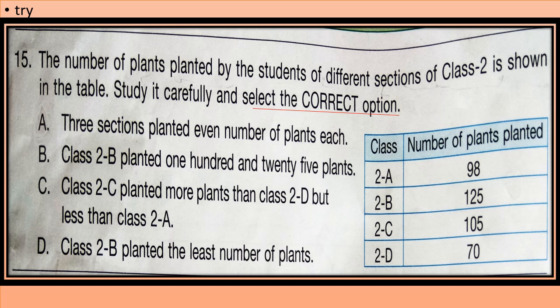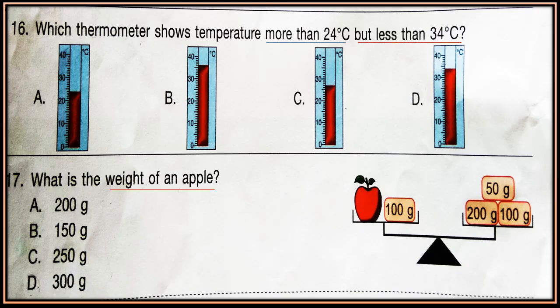D option: Class 2B planted the least number of plants. Now choose the correct option. Question 16. Which thermometer shows temperature more than 24 degrees Celsius but less than 34 degrees Celsius?